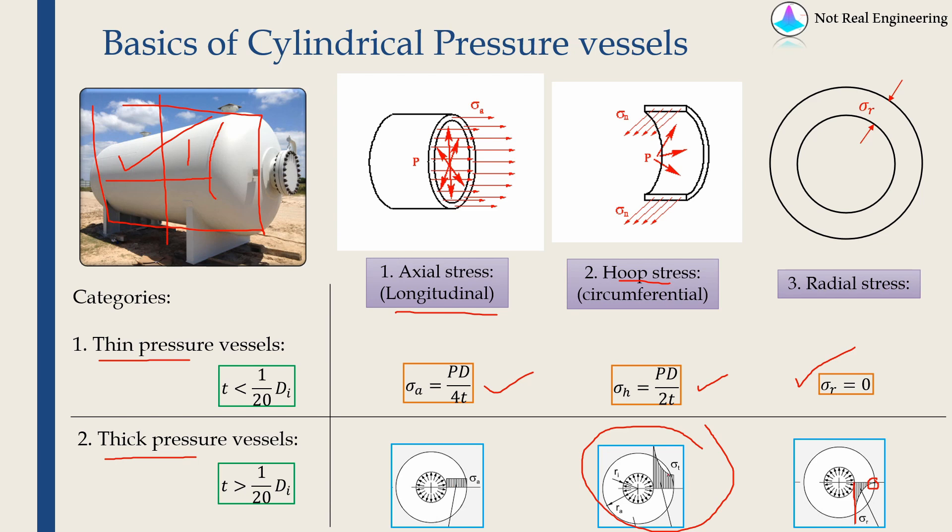And I'm not sure if you can see over here, but this is not a linear relation as well. So if you try to find formulas for hoop stress, axial stress, and radial stress for thick pressure vessels, you can of course get an analytical solution, but that will not be this simple. Those formulas are much more complicated. That's why I'm not including them over here.